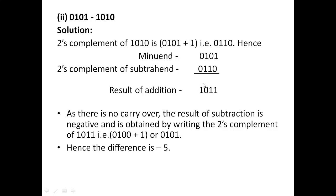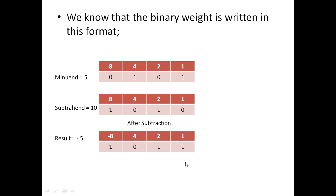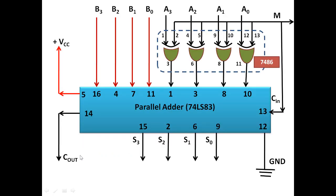Since there is no carry, it indicates the result is a negative number. The number we have received is in two's complement representation of minus five. Using binary weights, this was 5 and that was 10, and subtracting gives us minus 5. In two's complement representation, the most significant bit has a weight of minus 8, so minus 8 plus 2 plus 1 equals minus 5.